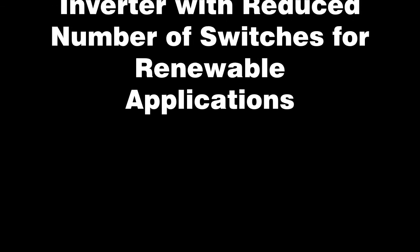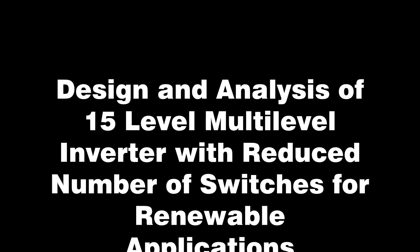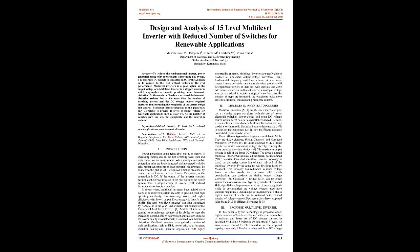Design and analysis of 15-level multilevel inverter with reduced number of switches for renewable applications. To reduce the environmental impact, power generation using solar power plants is increasing day by day. The generated DC needs to be converted to AC for AC loads or to connect to the grid without disturbing the grid performance.